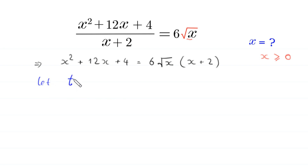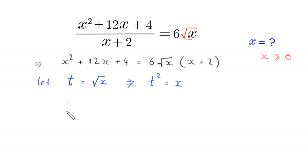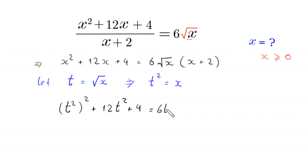We suppose that t is equal to root x. If we square both sides, this implies that t squared is equal to x. We substitute t and t squared into the equation, so the equation will become t squared whole squared plus 12 times t squared plus 4 is equal to 6 times t times t squared plus 2.